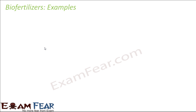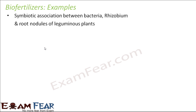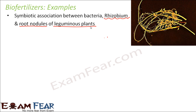One good example of a bio fertilizer is the nitrogen-fixing Rhizobium bacteria. Rhizobium is found in the root nodules of leguminous plants — plants like beans and peas. If you look at the roots of these plants, you can see nodule-like structures where Rhizobium bacteria are present. This is a symbiotic association between Rhizobium and the root nodules, meaning both parties get benefited. Rhizobium gets shelter and food from the root nodules.